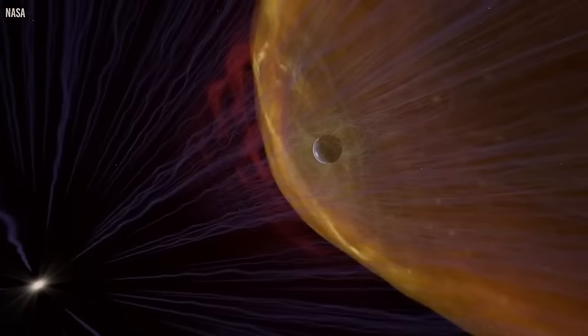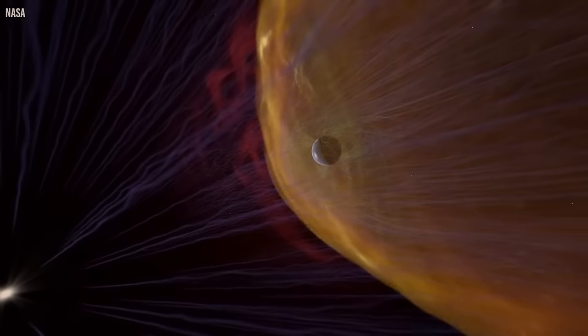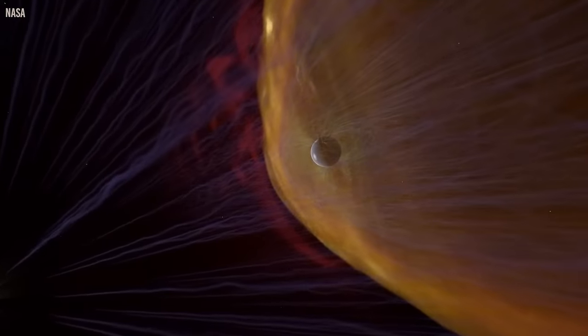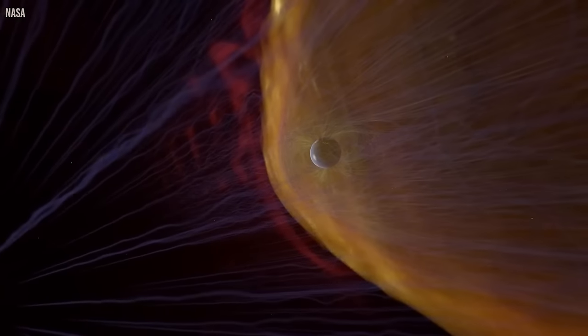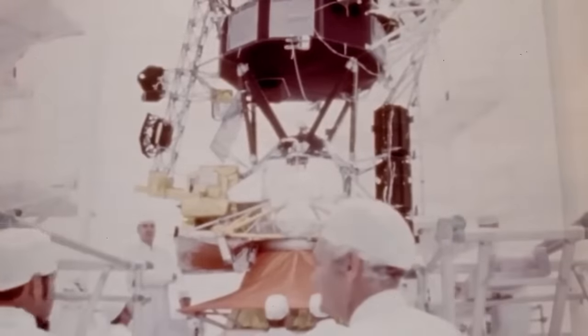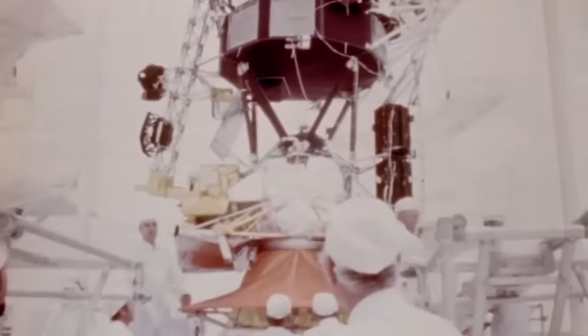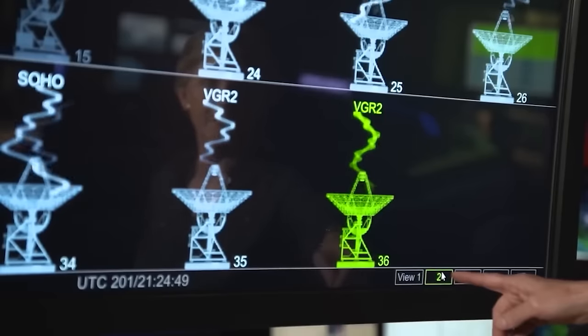The termination shock is the inner, roughly spherical barrier. The heliosheath is located beyond it. As Voyager 1 sped past the heliosheath, the solar system's most distant neighborhood, and what is believed to be the heliopause, its actual boundary, scientists had anticipated that it would pick up on two distinct signals.